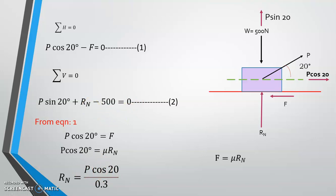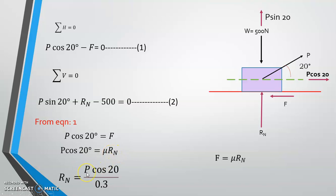From equation 1: P cos 20 equals F1. Since F1 equals mu into Rn, substituting: Rn equals W minus P sin 20. Substituting Rn and solving: F equals mu into Rn, with mu equal to 0.3, to find the values of P and the frictional force F.